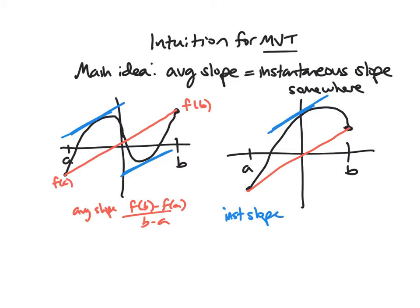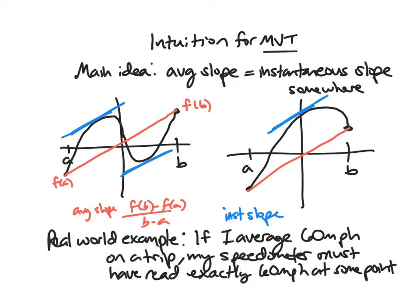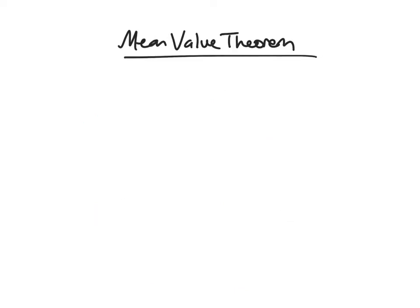For a real-world application, let's take an example of driving in a car. If I average 60 miles per hour — my average rate of change, my average velocity, is 60 miles per hour over an entire trip — then the Mean Value Theorem says that at some exact second on my trip, my speedometer must have read exactly 60 miles per hour. There's no way I could have skipped over 60 and still averaged 60 throughout.